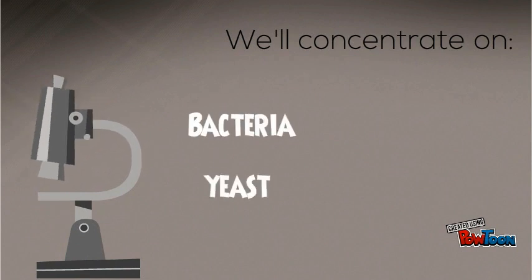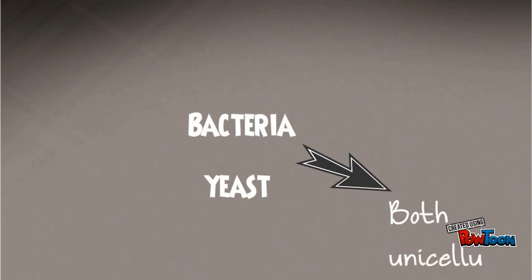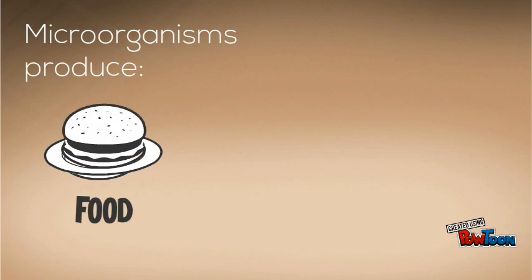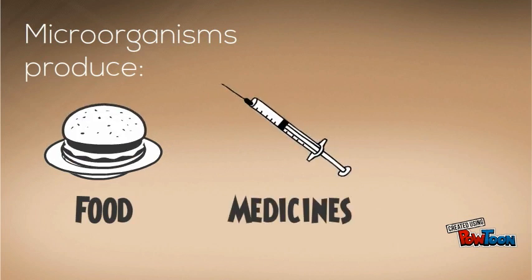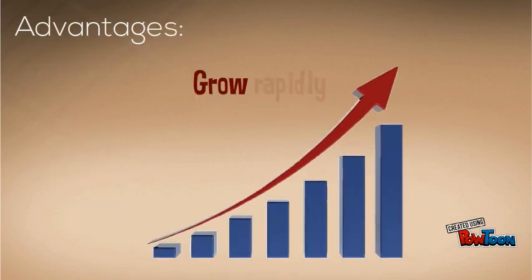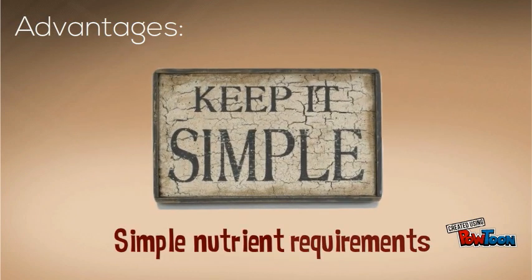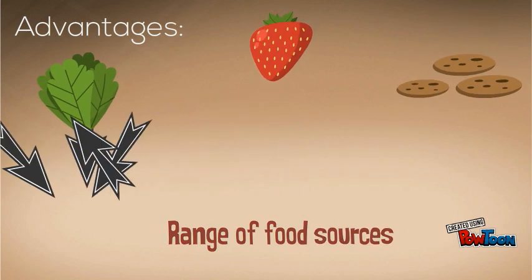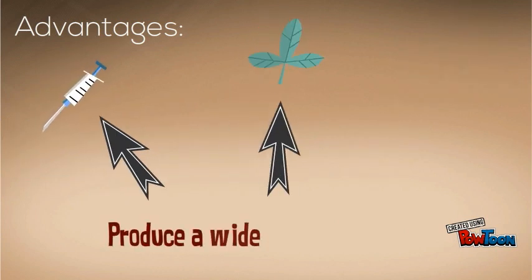They are both unicellular. Microorganisms can be used by humans to produce foods and other useful substances. They are suitable for this role because they grow rapidly, have simple nutrient requirements, they have a range of food sources, and they can produce a wide range of products.